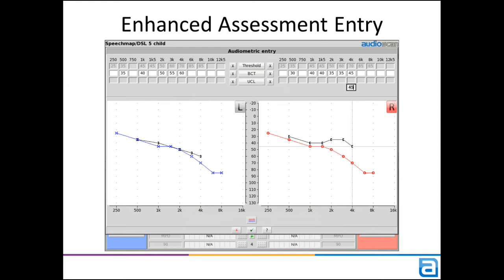The same goes for measured UCL, and once again, if you enter only one side and the opposite ear remains empty, you'll have the option to copy the data. If you need to erase any of these curves, select the small X button beside the data type.